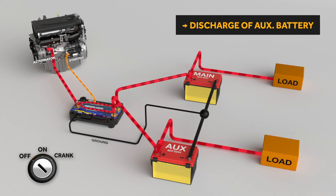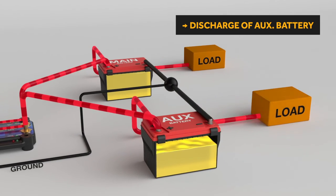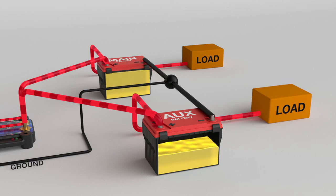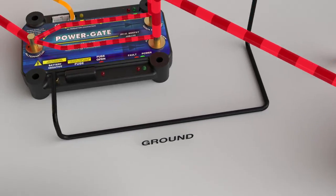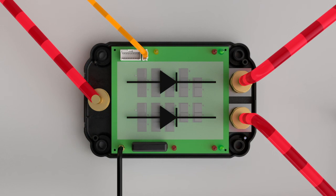When loads are applied to the auxiliary battery, the dual rectifier will not allow current from the main battery to feed auxiliary battery loads. Current wants to flow from main to auxiliary battery, but the MOSFET-based ideal diode will not allow current to pass.